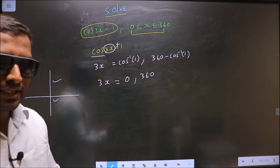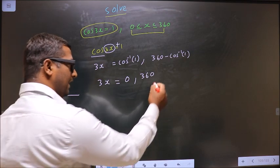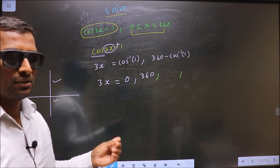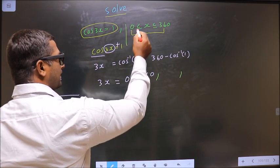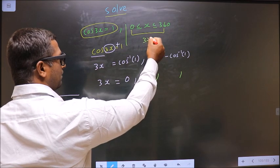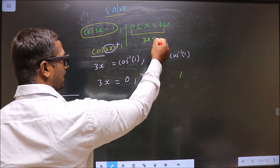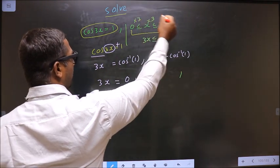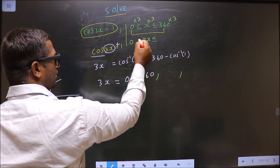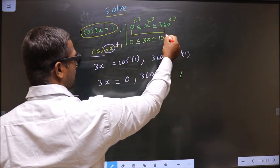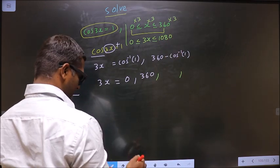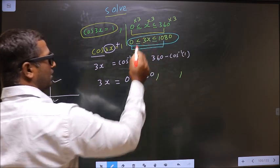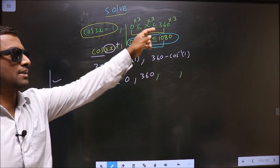Now, how will we decide shall I find any more angles for 3x or not? To answer that we do this. Here x lie in this interval. Then in what interval will 3x lie? To answer that we multiply by 3. So we get 0 less than or equal to 3x and this less than or equal to 1080. So now 3x should lie in this interval. Automatically x will fall in this interval.